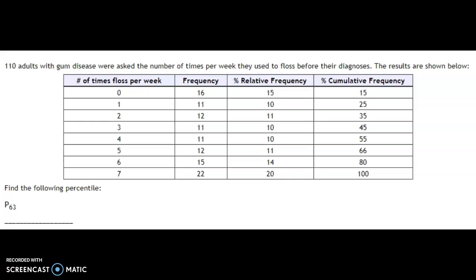On this problem we're trying to find the percentile for a frequency distribution. You really just need to focus on the first column, which is where you get your answers, and the last column, because the cumulative frequency is basically your percentiles. We needed the frequency and relative frequency columns to build the cumulative frequency column, but you can ignore those to answer the question.